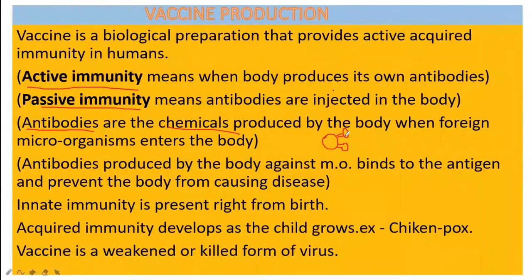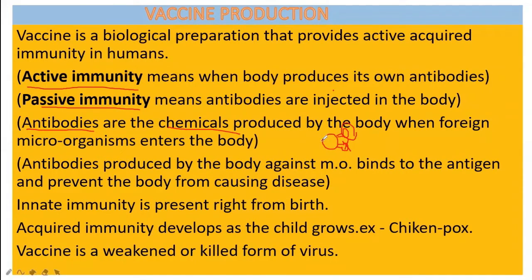The antigen produces toxic protein in our body and is responsible for causing disease. But what are the antibodies doing? These antibodies bind to the antigen of the microorganism. Because of this binding, the antigens are unable to produce the toxic substance. So even though the microorganisms enter our body, they are not secreting harmful protein.